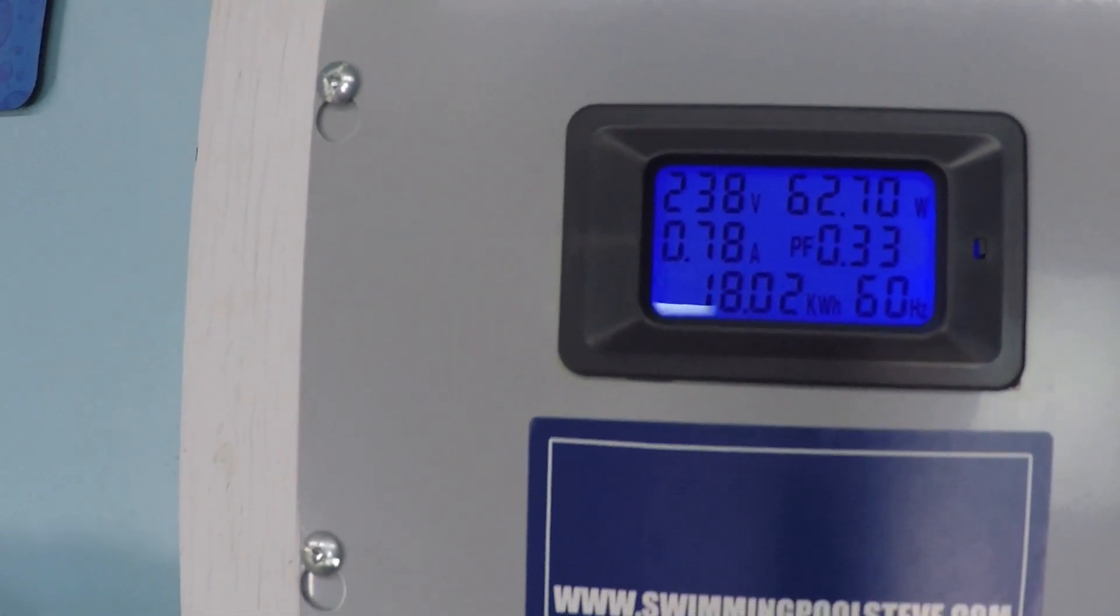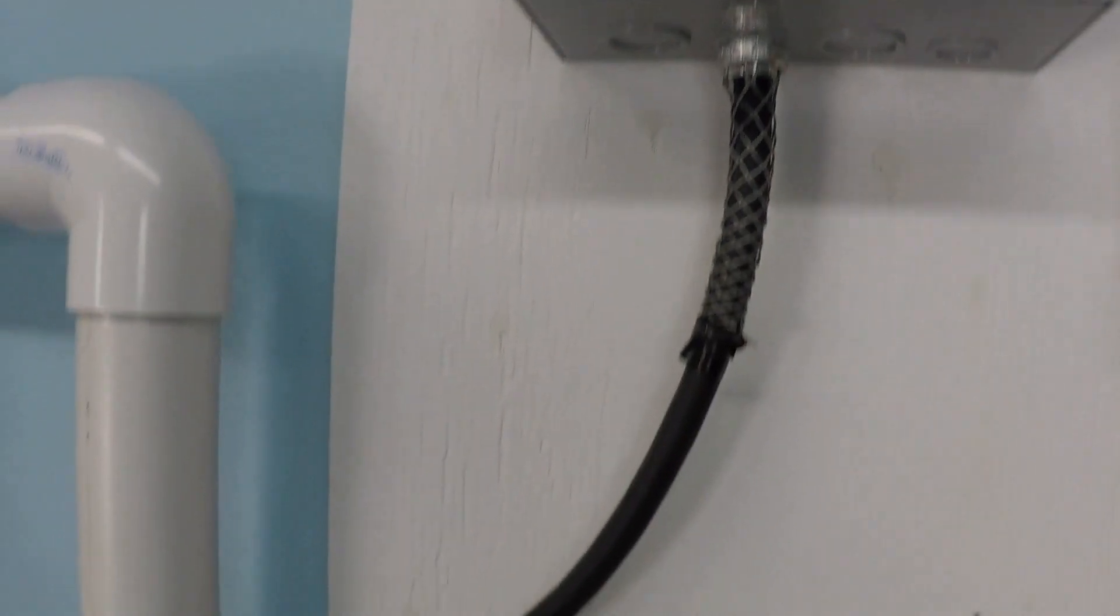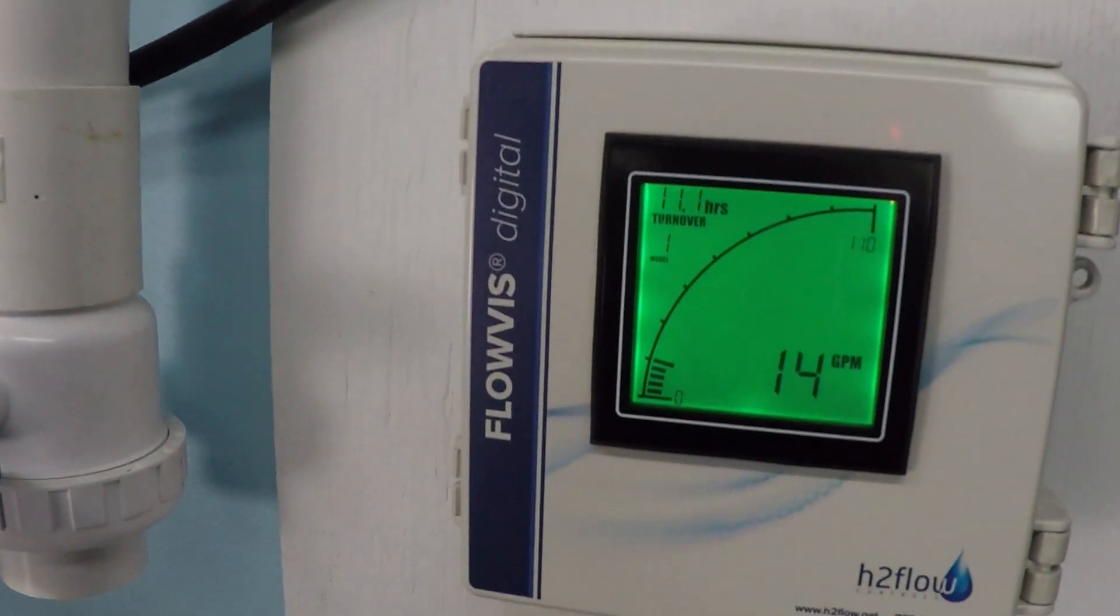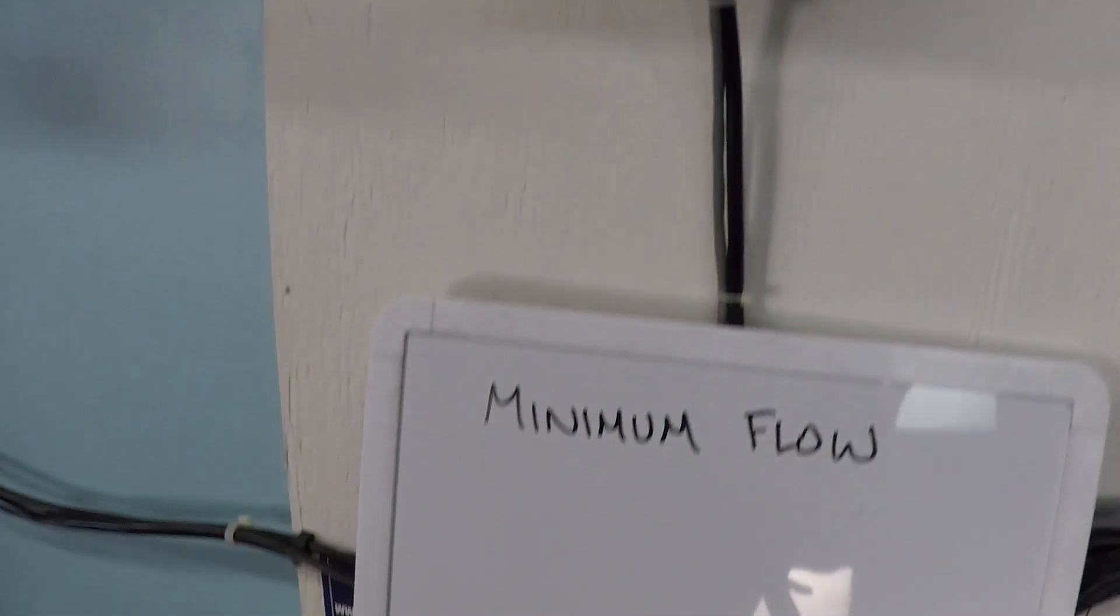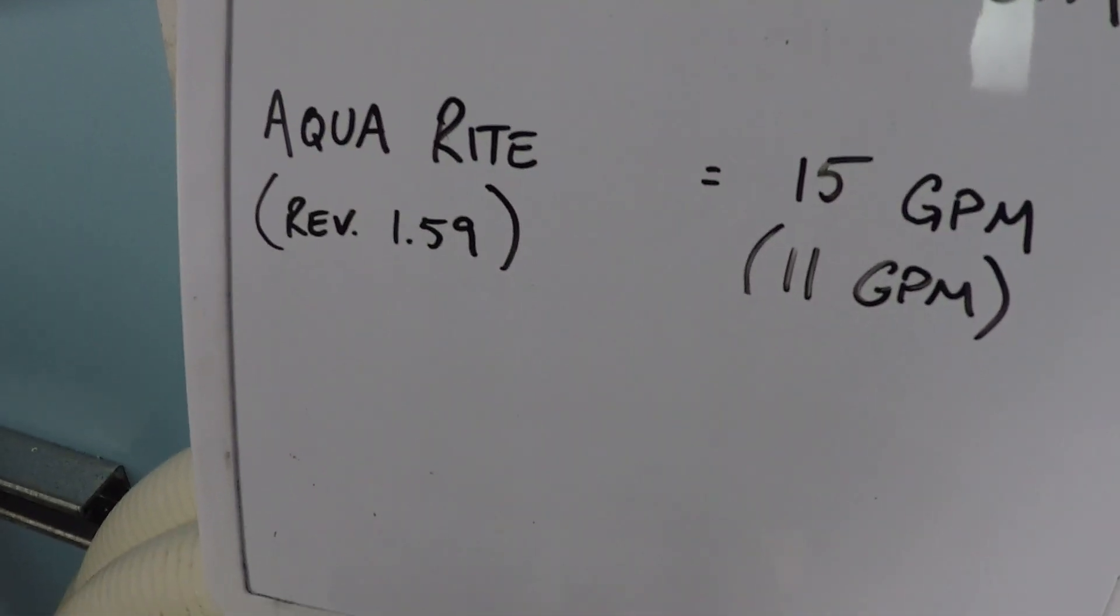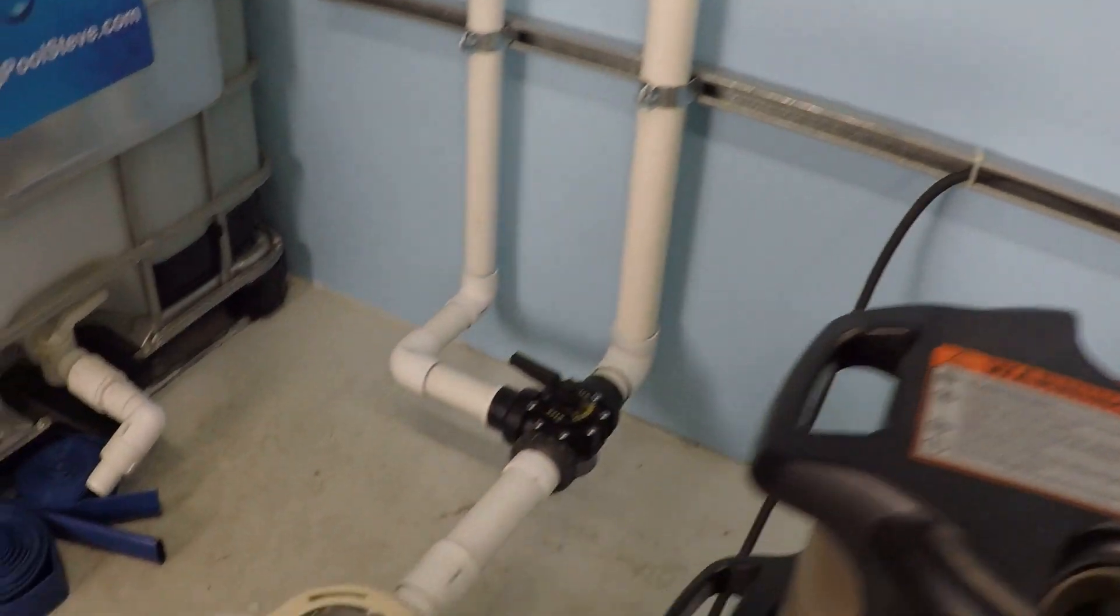The point being here is that at 500 RPM and scarcely more power than a 60-watt light bulb, in all likelihood I'm achieving enough flow to close the flow switch on one of these Hayward systems.